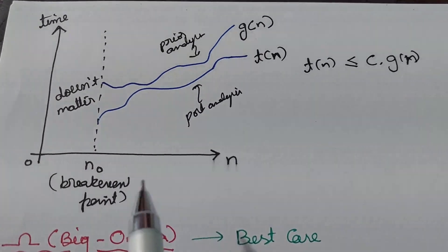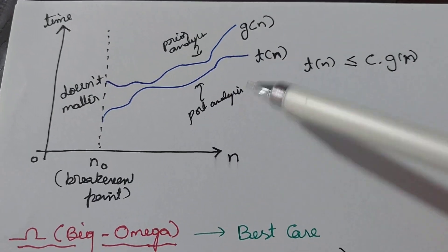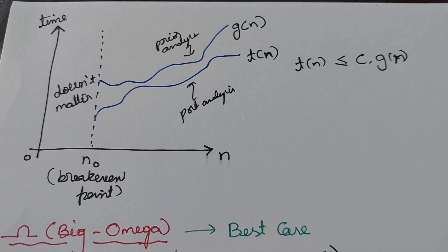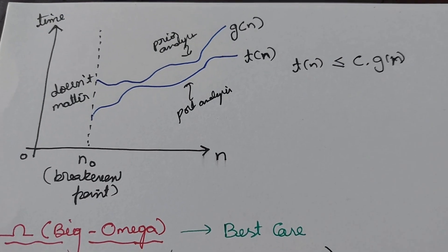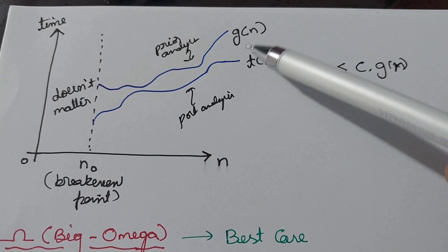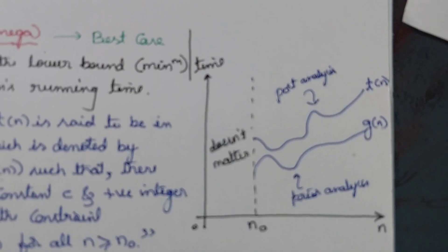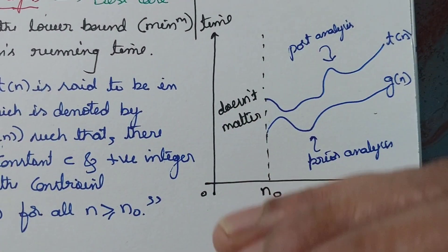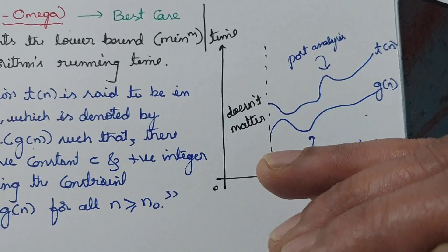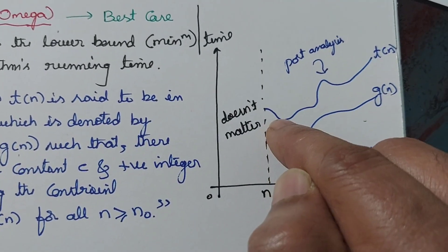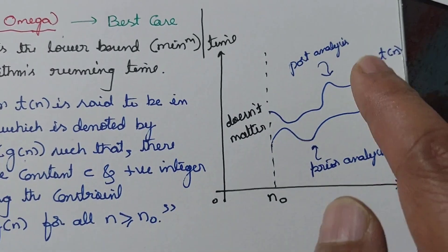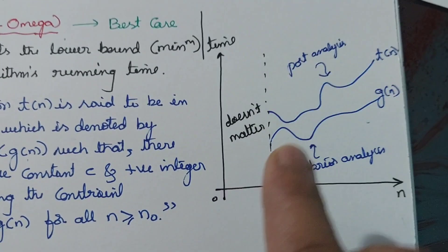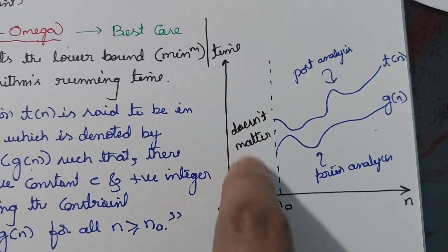On the graph for Big Omega, g(n) is the known lower line taking the lesser time, and t(n) must be greater than or equal to g(n) — so the two lines are interchanged compared to Big O: g(n) is at the bottom and t(n) is above it. Again, the graph starts only after n₀, the break-even point.